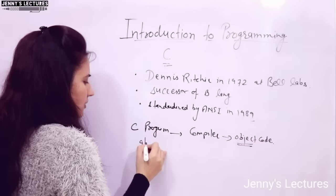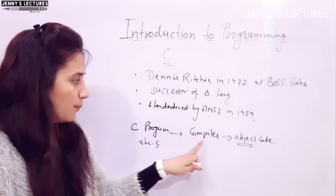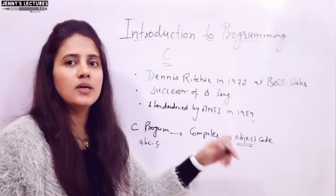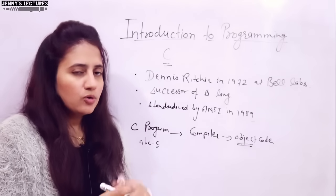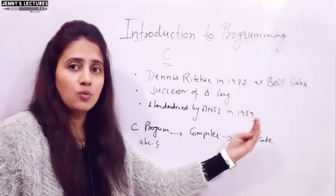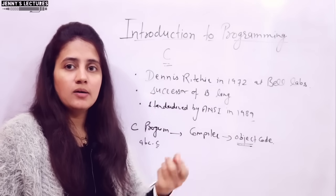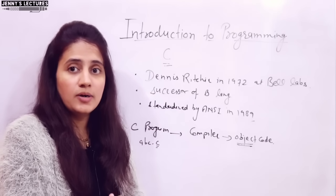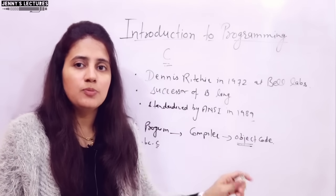The program you write in C language has to be converted into an object file — machine code, zeros and ones — and this is done by the compiler. That is why C is known as a compiled language. The C program file has a .c extension, and the compiler converts it into object code. Then the CPU runs the program. The complete process — the role of the linker, loader, and executable file — will be discussed in a separate video.